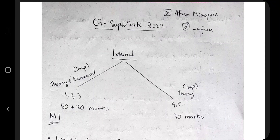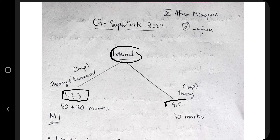Hello everyone, today in this video we will be discussing some questions which are also called the gems of the module. In every module there are questions which are repeated many times and you can never miss those. The whole subject is divided into two parts: the first, second, and third modules, and the second part is the fourth and fifth module. The fourth and fifth module is completely theory and can fetch you 30 marks.